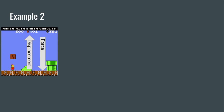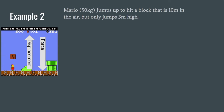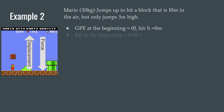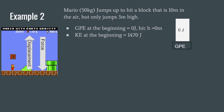Let's look at example two — Mario jumping to hit a block. Mario is 50 kg; he jumps up toward a block 10 meters in the air but only reaches 3 meters high. This problem gives more information than needed, so we identify what's relevant. GPE at the beginning is zero joules because Mario starts on the ground. KE at the beginning is 1470 joules.